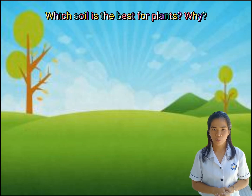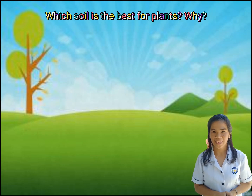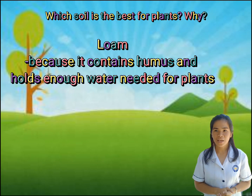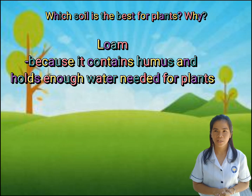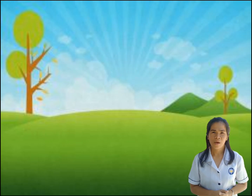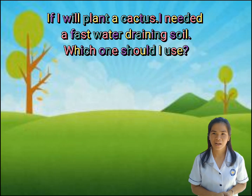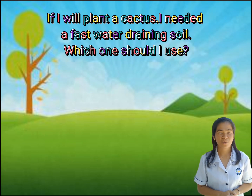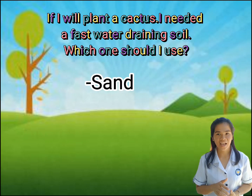Which soil is the best for most plants and why? Loam, because it contains humus and holds enough water needed for plants. But if I will plant a cactus, I need a fast water-draining soil. Which one should I use? Sand. You're amazing! Thank you for listening and watching. Hope you enjoy it. Bye!